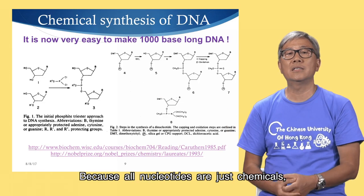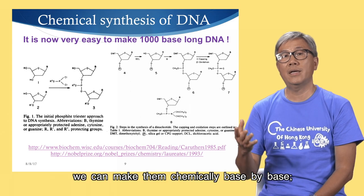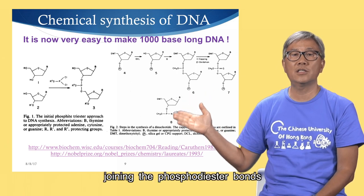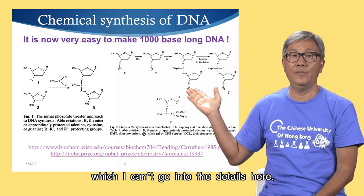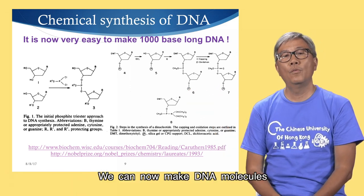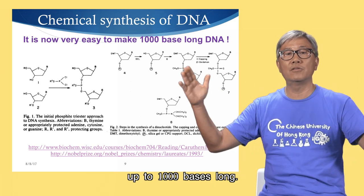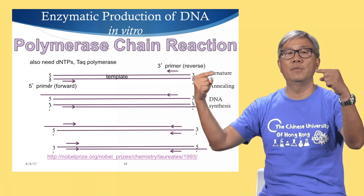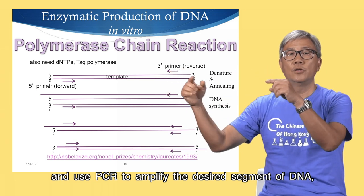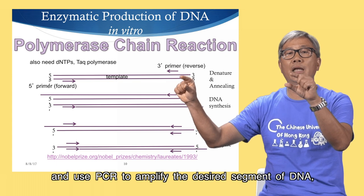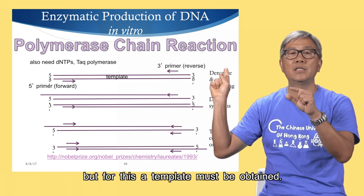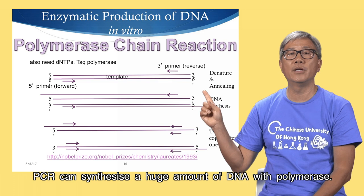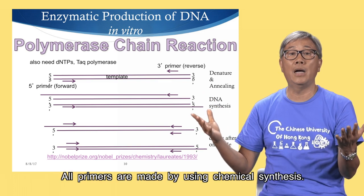Because all nucleotides are just chemicals, we can make them chemically, base by base. Joining the phosphodiester bonds with different chemical methods, we can now make DNA molecules up to 1000 bases long. Alternatively, we can design primers and use PCR to amplify the desired segments of DNA, but for this, a template must be obtained. PCR can synthesize a huge amount of DNA with polymerase. All primers are made using chemical synthesis.